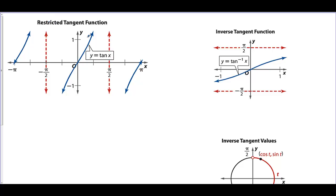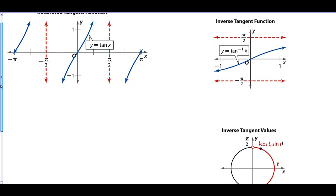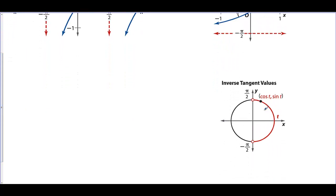Restricted tangent function. We look at one period of tangent. On the x-axis it goes from negative pi over 2 to pi over 2, and on the y-axis from negative 1 to 1, shooting off to infinity. For inverse tangent, the x values become negative 1 and 1, and the y values become pi over 2 and negative pi over 2, going infinitely. As x goes to infinity for inverse tangent, the function levels off at pi over 2. The principal quadrants are quadrant 1 and quadrant 4, just like sine.